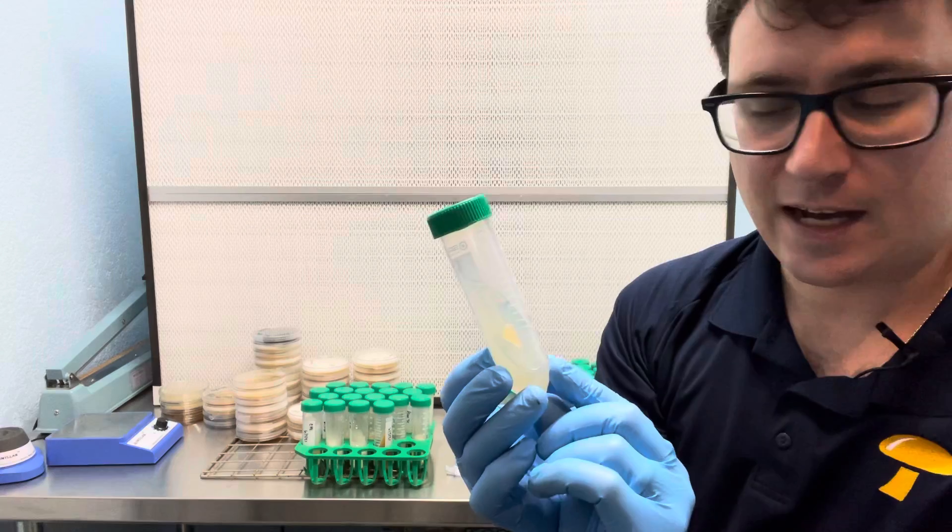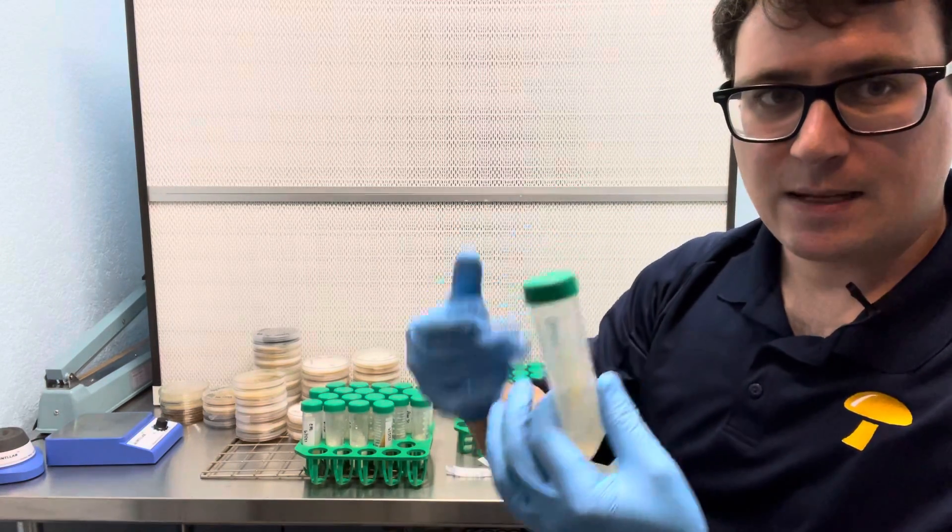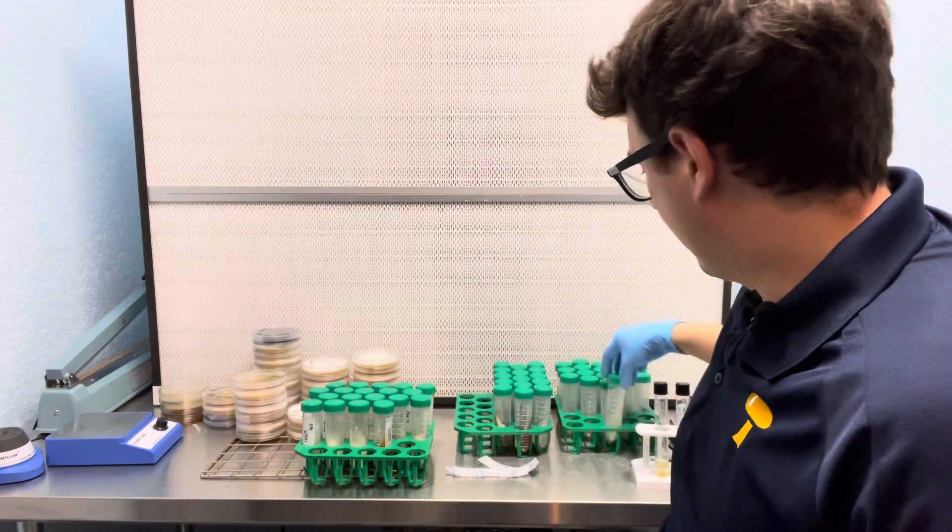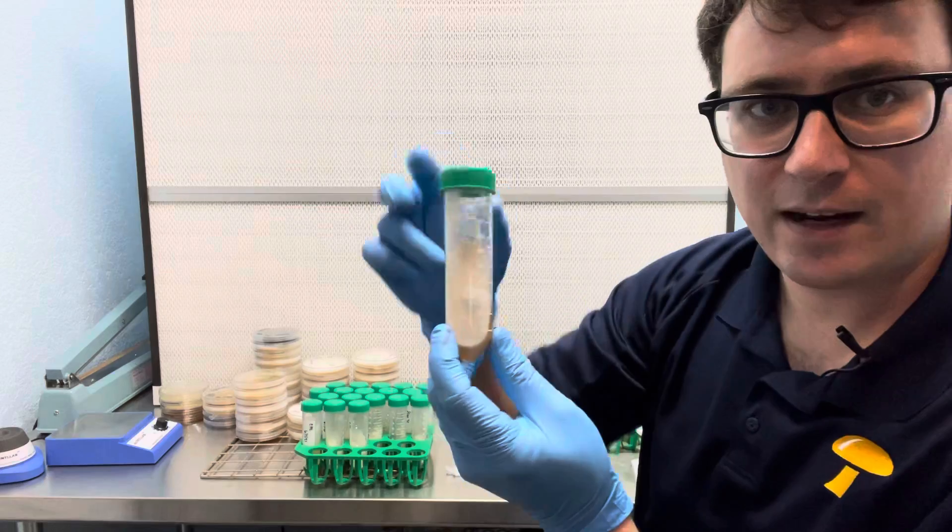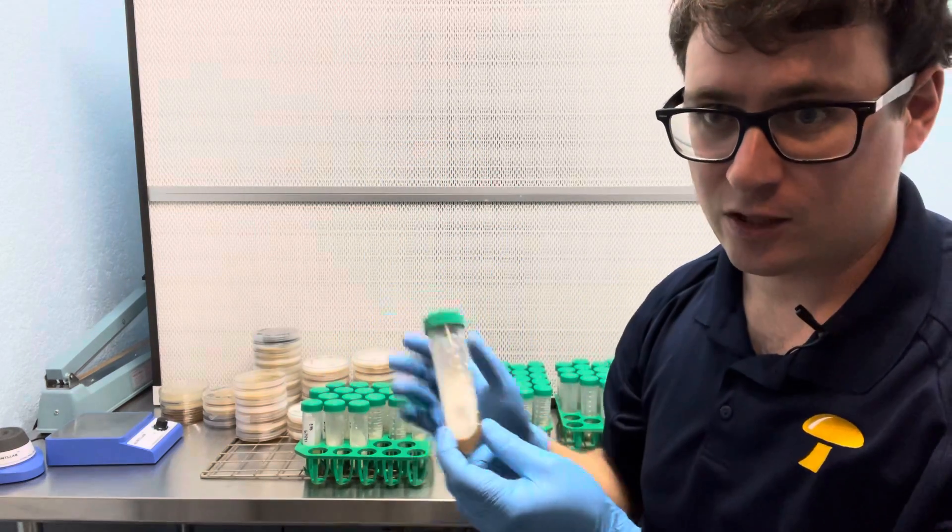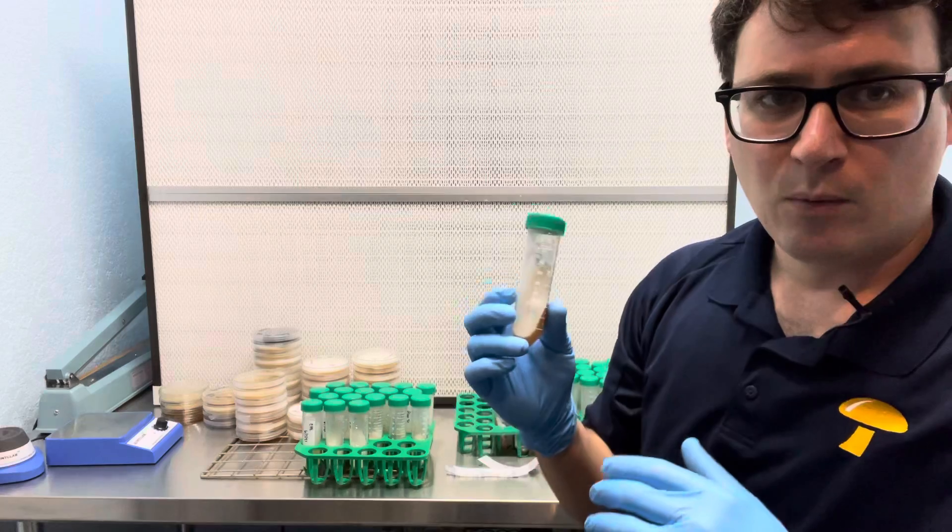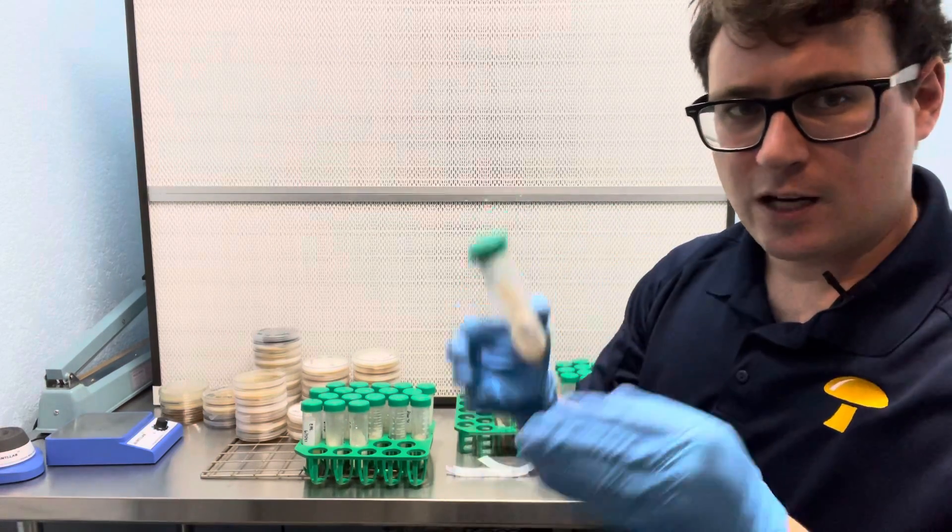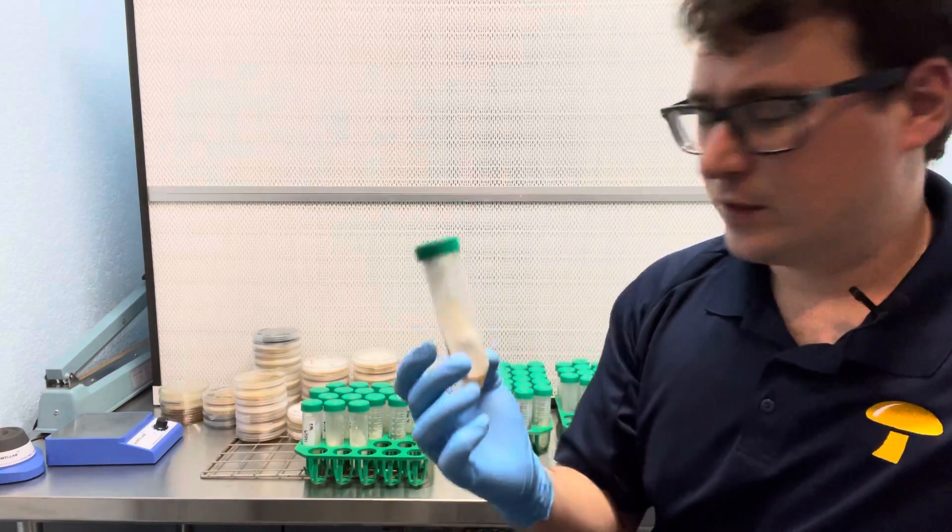So this is potato dextrose agar. I usually rotate between malt extract and potato dextrose when I'm doing my long-term storage. So you can see this one here is on malt extract so I would go ahead and put this one onto potato dextrose and that just kind of keeps the mycelium more vigorous. It keeps it healthier by switching up the nutrients so it doesn't get used to the same food source.